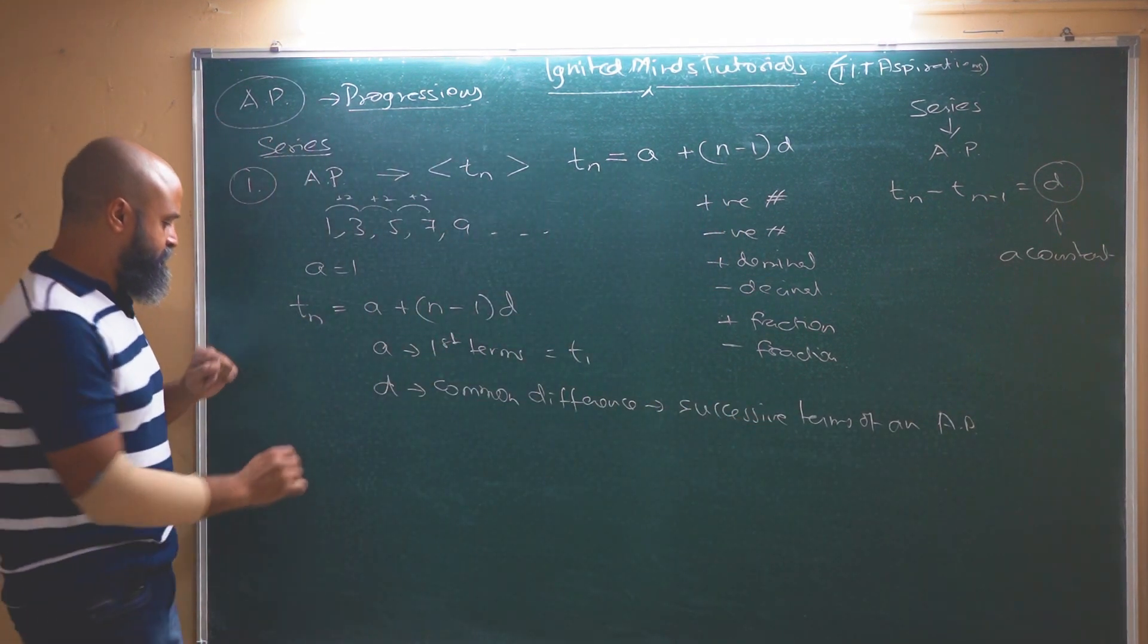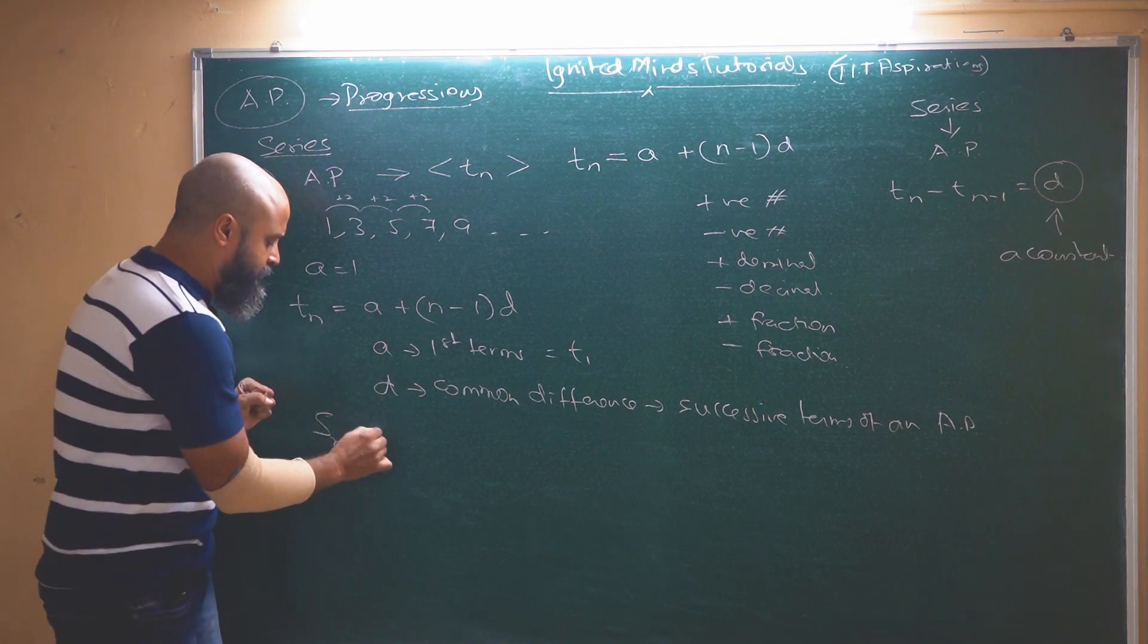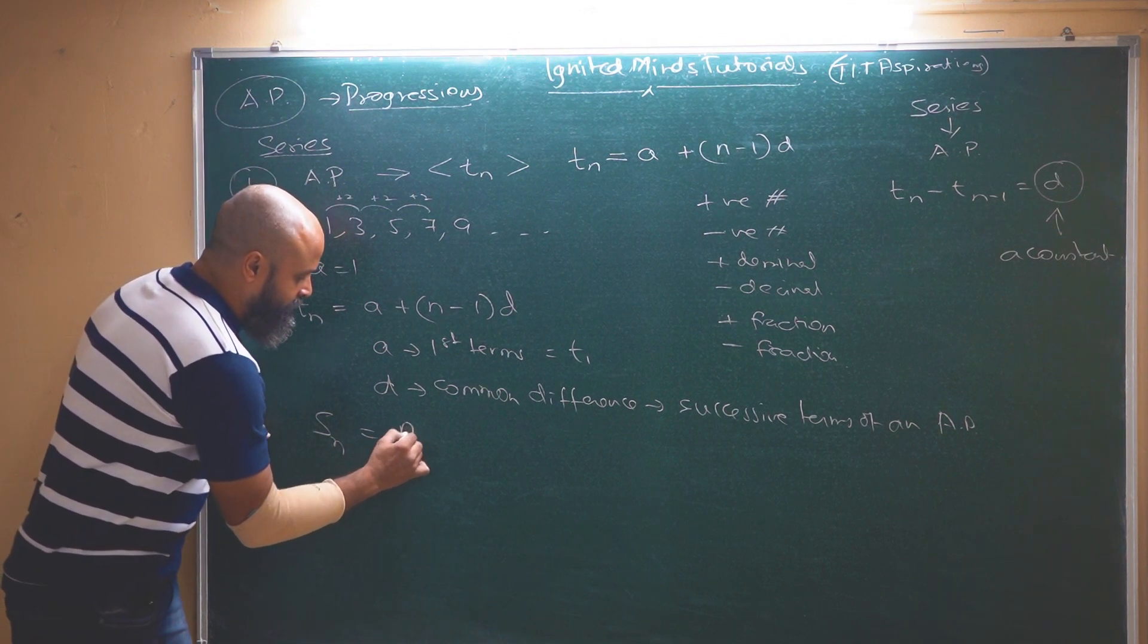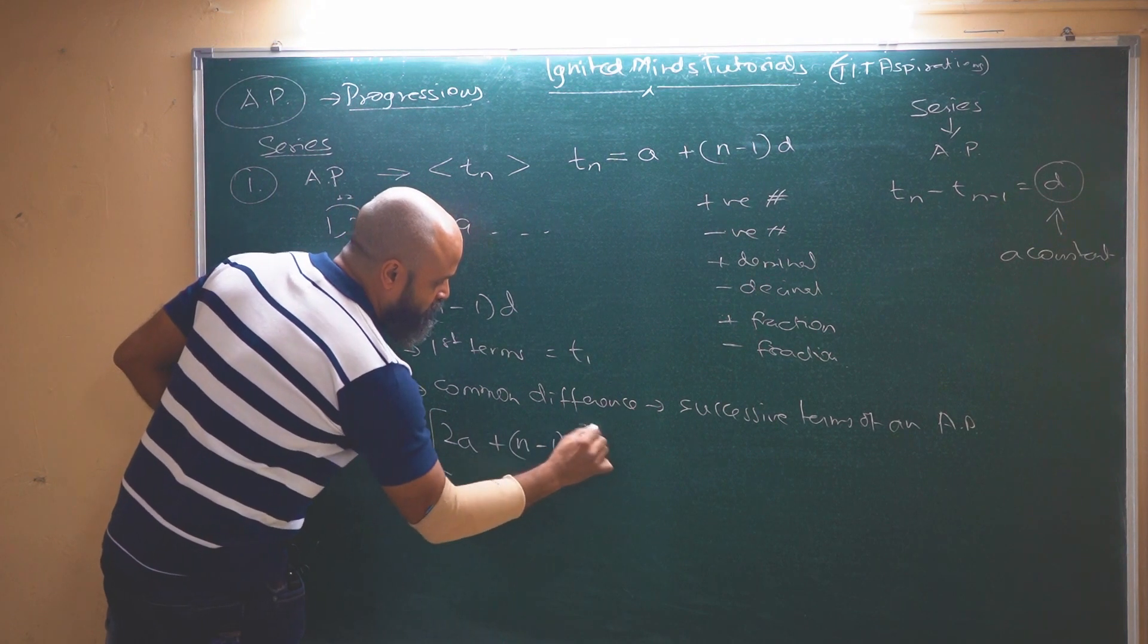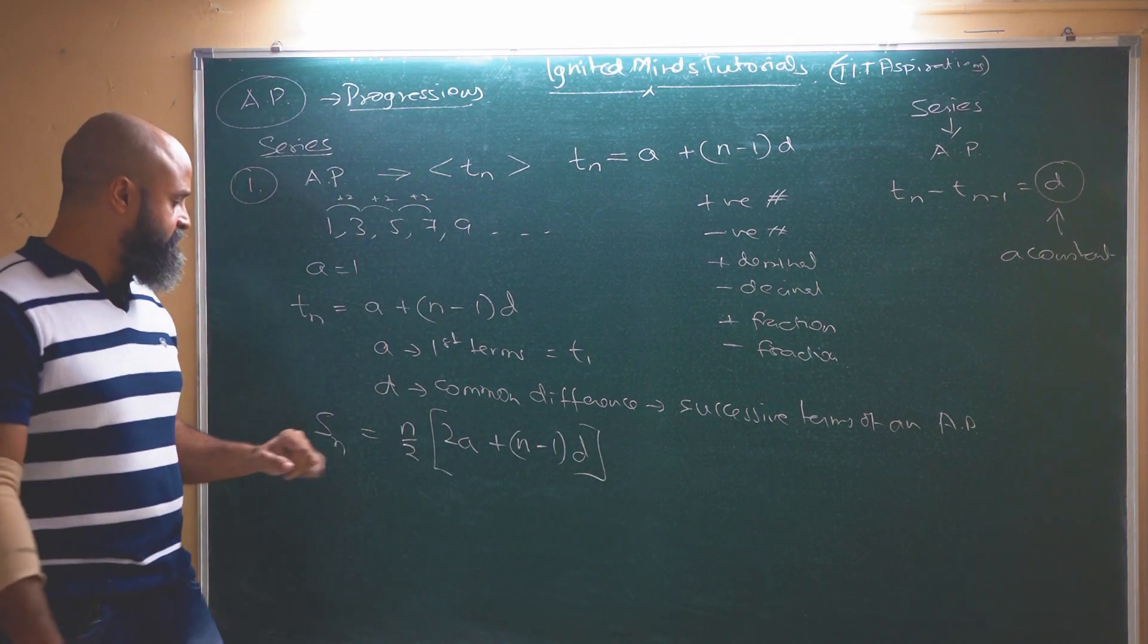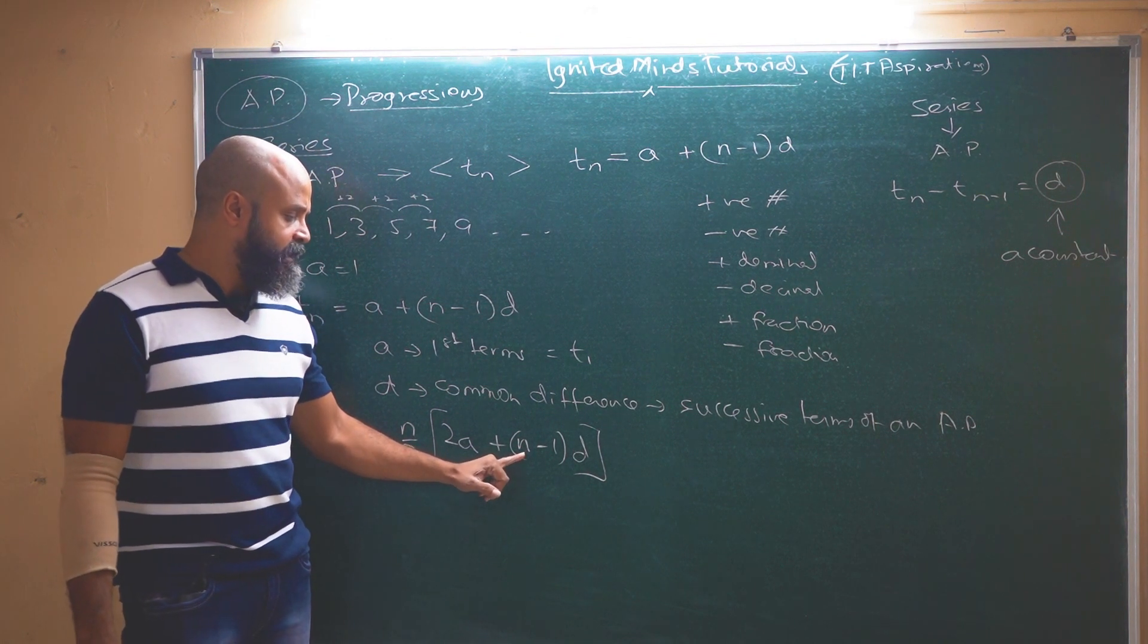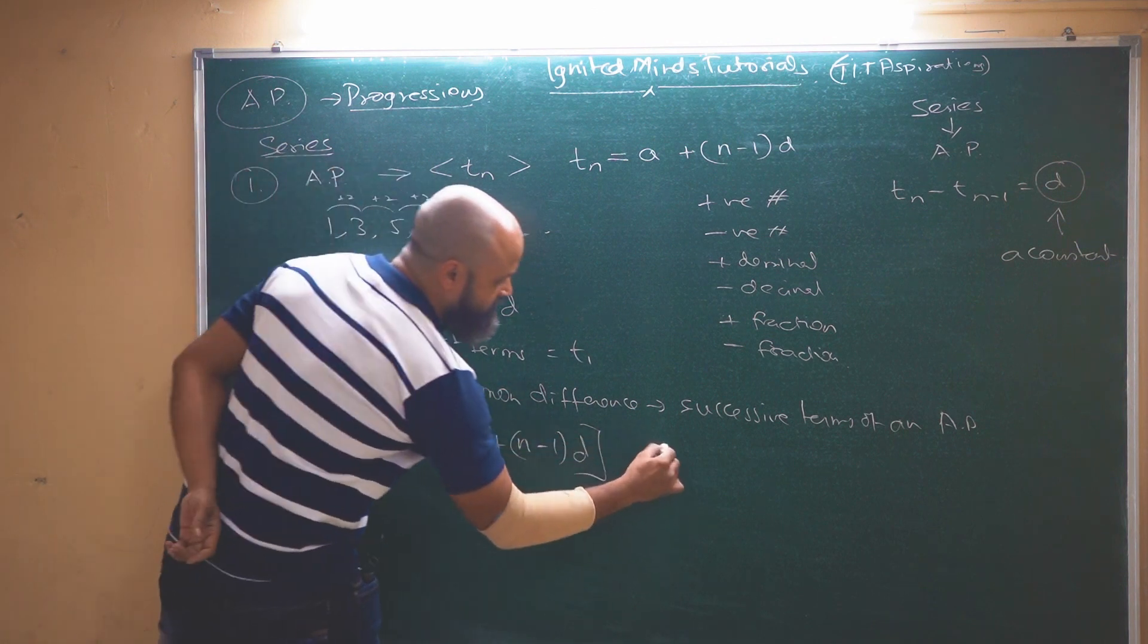The second thing that is associated with this is the sum of n terms which again you have studied but just to reiterate, this will be sum of n terms that is going to be n by 2, 2a plus n minus 1 into d. Now there are two ways to represent this. This is the first term of course, this is the sum of n terms, n is the number of terms and d is the common difference.